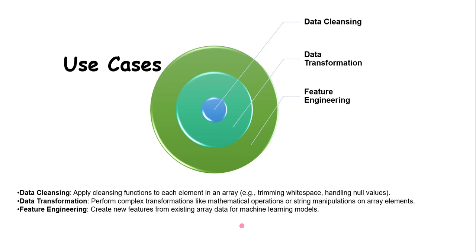The next use case is feature engineering, which is more suitable for machine learning related use cases. Feature engineering is a very important concept in the context of training machine learning models. The transform function can help to create new features from existing data, such as extracting elements from text, creating interaction terms, or normalizing values, enhancing the dataset and improving model performance.